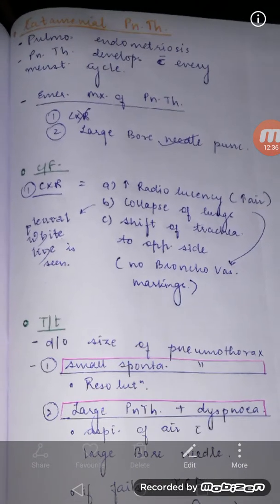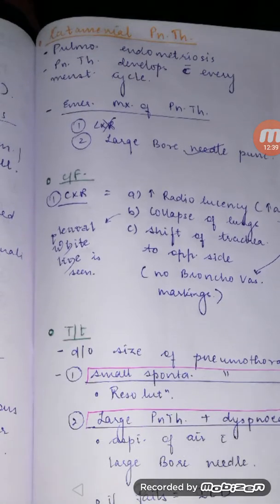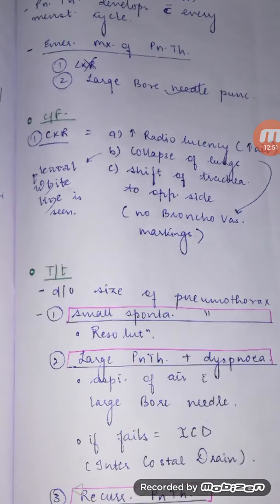Catamenial pneumothorax means pneumothorax related to the menstrual cycle. As mentioned, endometriosis tissue can be present in the lungs — pulmonary endometriosis — and so pneumothorax develops with every menstrual cycle.